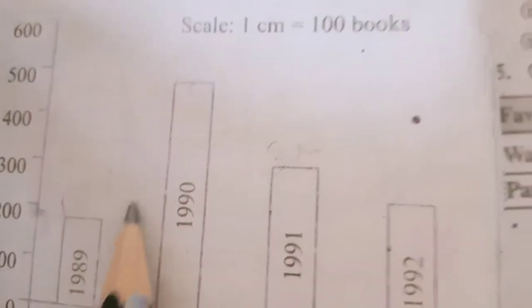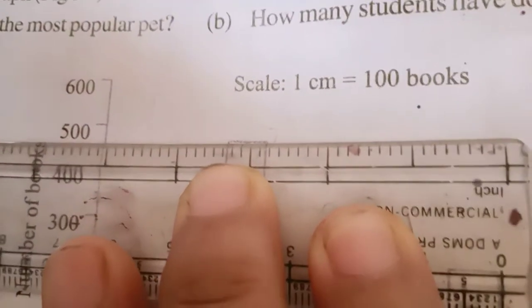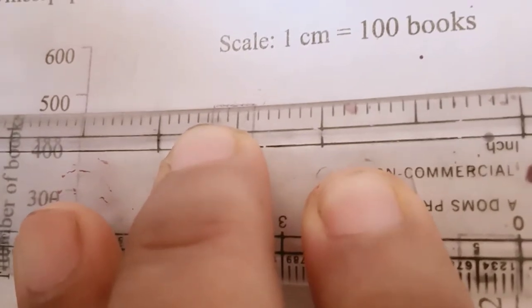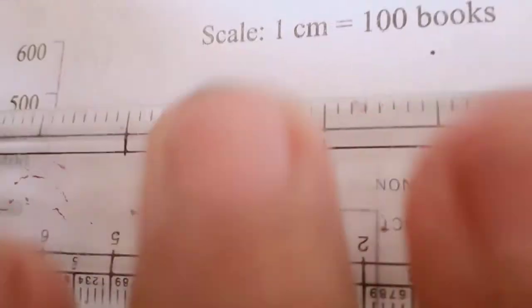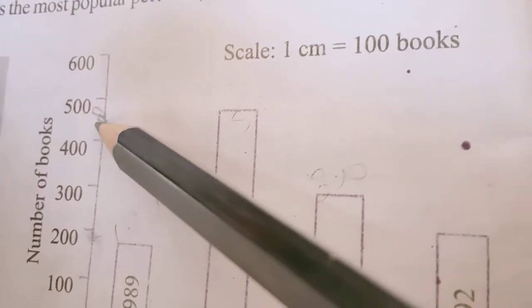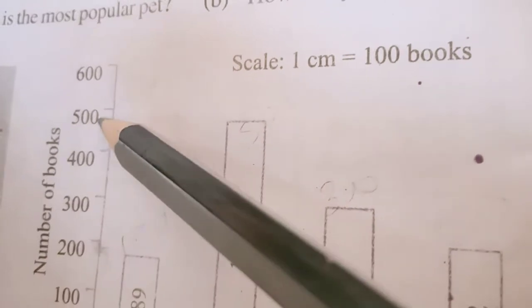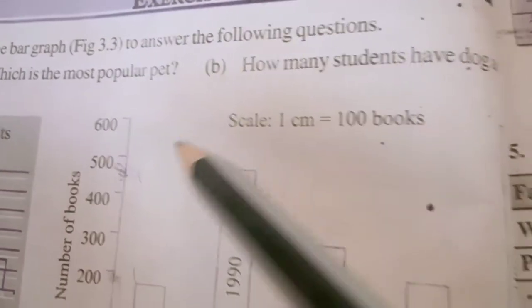Number of books sold in year 1990. Come to the bar of 1990. See if it touches the 500 line or not. This is the line. Again it is not touching 500 exactly. I will mark its exact position. The answer is approximate, it is not exact answer. See the marking - it is above the half. Means 450 will not be the answer, 500 not. In between is 475 will be the answer.